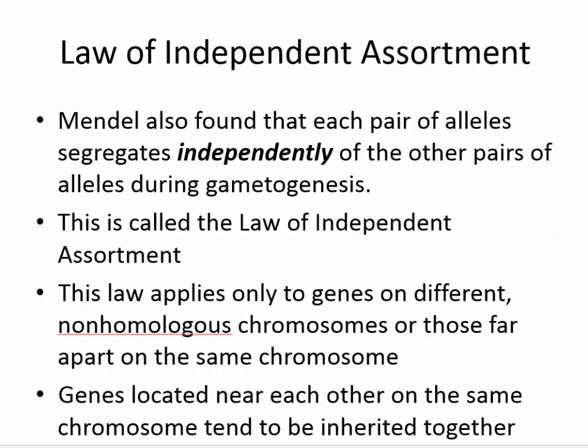There is another law of Mendel, called the law of independent assortment. Mendel found that each pair of alleles segregates independently of other pairs of alleles during gametogenesis. This law applies only to genes on different non-homologous chromosomes, or those far apart on the same chromosome. Genes located near each other on the same chromosome tend to be inherited together as a block.